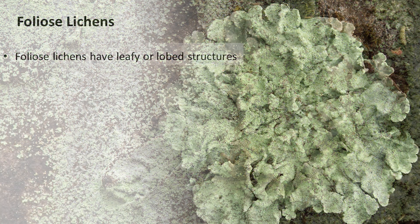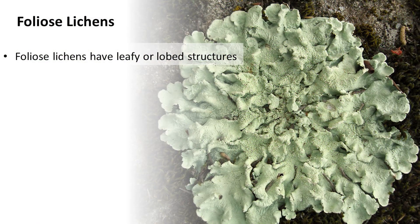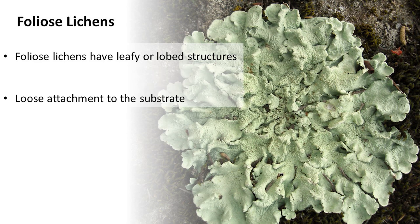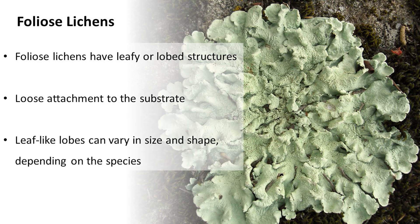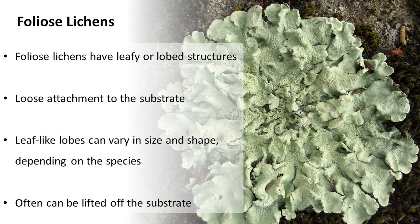Foliose lichens have leafy or lobed structures. They are loosely attached to the substrate, such as rocks, bark, or tree branches. Leaf-like lobes can vary in size and shape depending on the species and can often be lifted off the substrate.